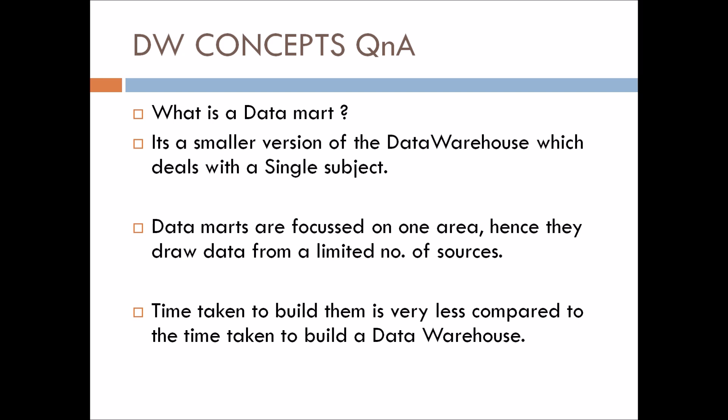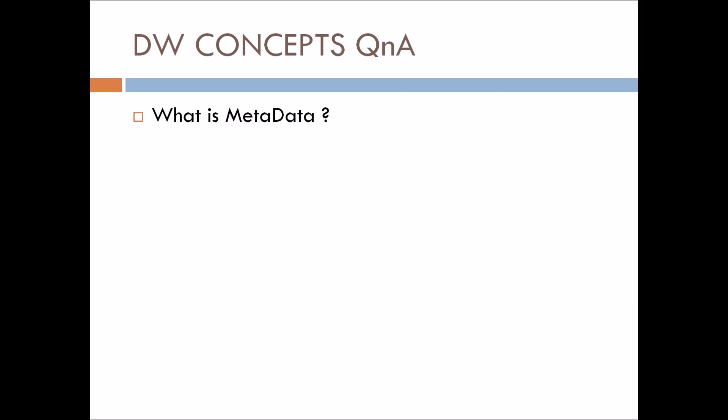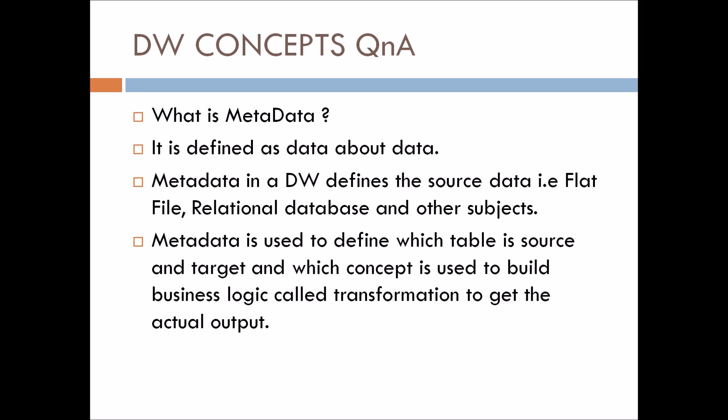Let's move to the next question: What is metadata? So it is defined as data about data. Metadata in a data warehouse defines the source data — the kind of file, whether it is a flat file or a relational database. Metadata is used to define which table is source and target, and which concept is used to build the business logic called transformations to get the actual output.